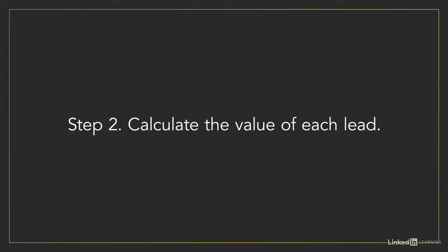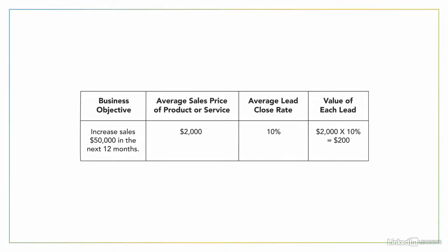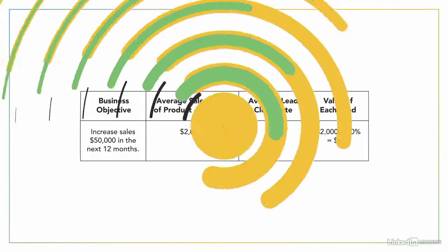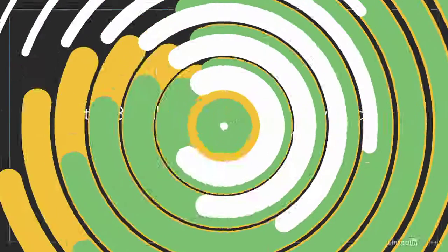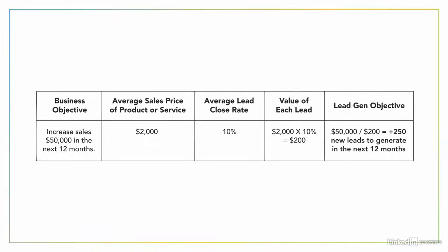The second step is to calculate the value of each lead. Multiply your average sales price times your average lead close rate. In this example, your average sales price is $2,000 and your average close rate is 10%. When you multiply those two numbers, you see that your average lead value is $200. The third step is to calculate how many new leads you need to generate. Divide your sales objective by the value of each lead. So in this example, divide $50,000 by $200. Now you have your lead gen objective, which is to obtain 250 new leads in the next 12 months.